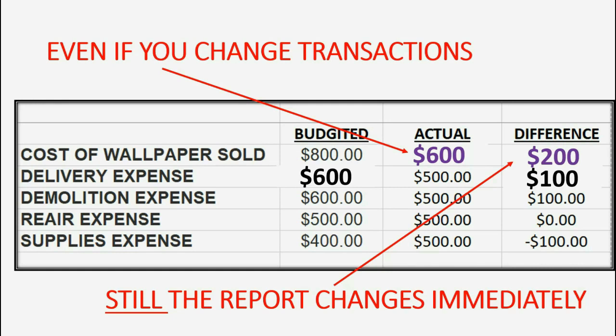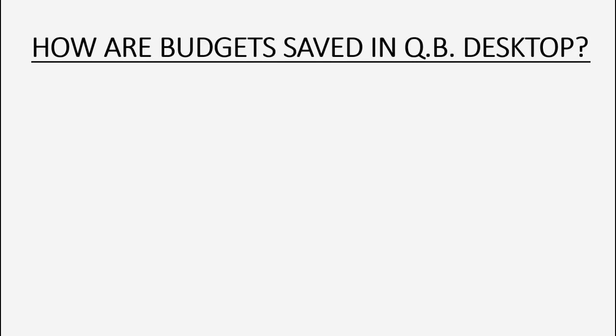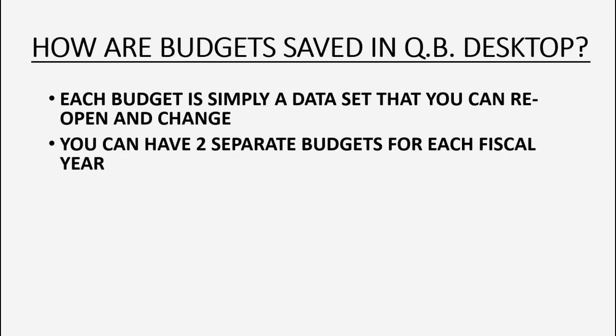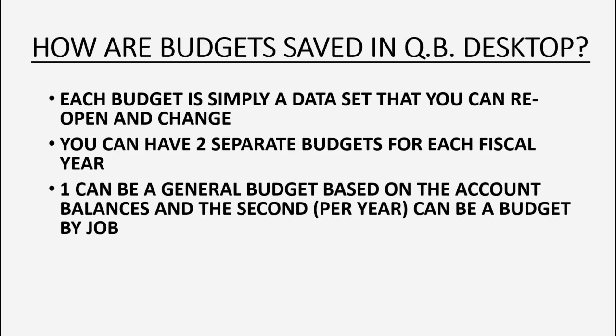You may well ask: how are budgets saved in QuickBooks Desktop? Each budget is simply a data sheet that you can reopen and change. You can have two separate budgets for each fiscal year — one is a general budget based on account balances, and the second budget can be your budgets by job.